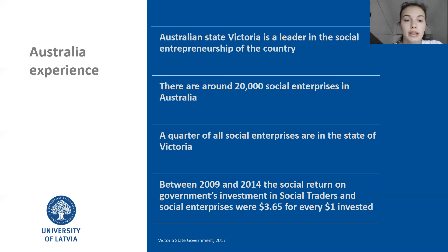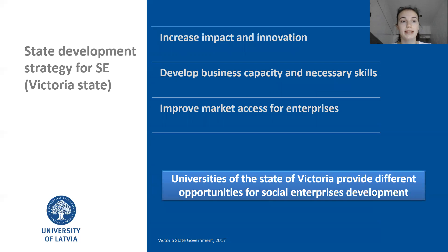Social Traders is one of the leading organizations who support social enterprises in Australia, providing a diverse range of services, sector growth and development. What is the state strategy for social entrepreneurship development? In general, they have three big steps in order to improve social entrepreneurship. First is to increase impact and innovation. Secondly, develop business capacity and necessary skills. And finally, improve market success for enterprises.